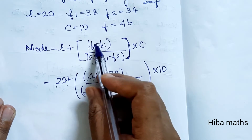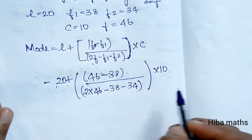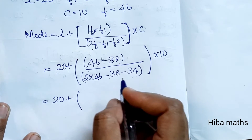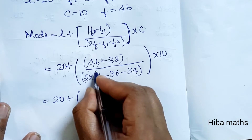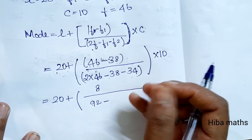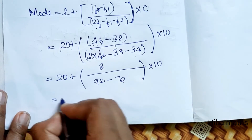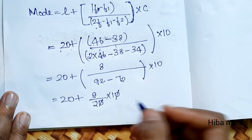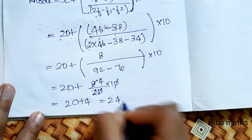Calculating: 46 minus 38 equals 8. The denominator is 2 times 46 minus 38 minus 34, which gives 92 minus 72 equals 20. So Mode equals 20 plus 8 divided by 20, into 10. That simplifies to 20 plus 4, giving the answer 24.